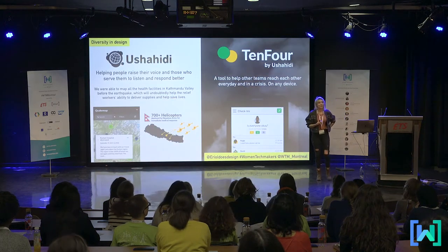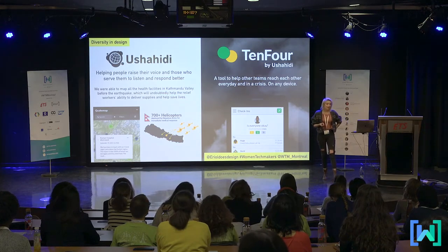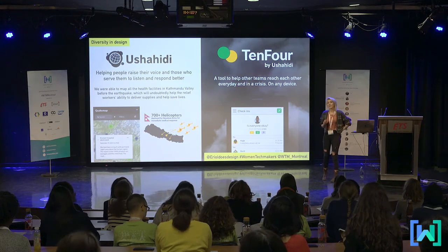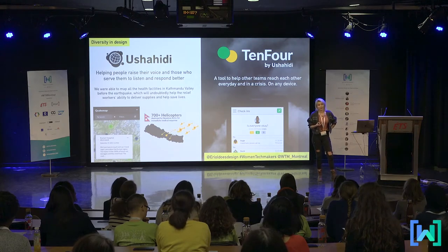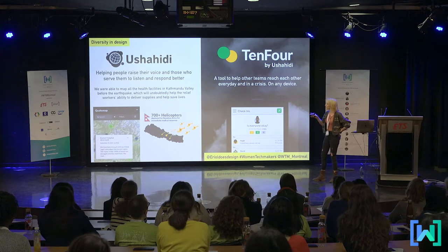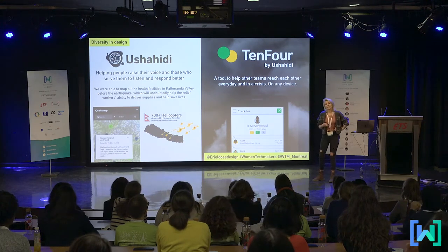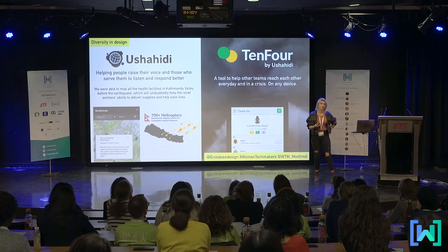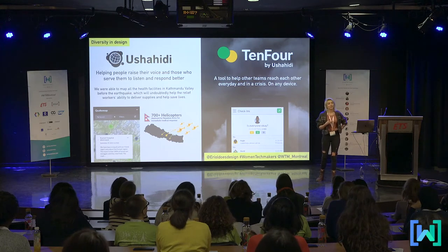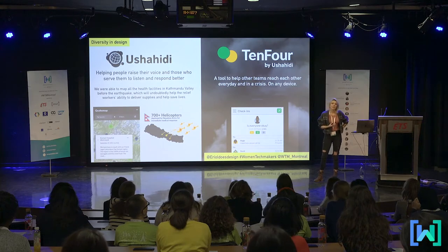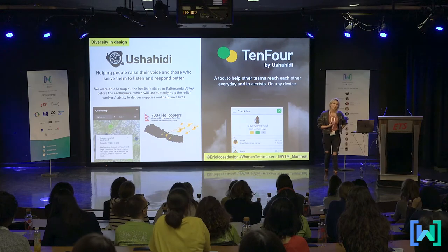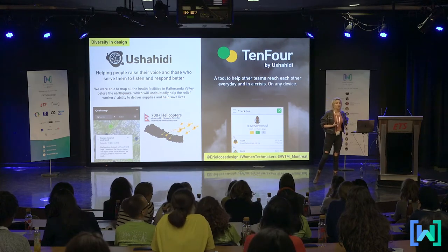I work for a company called Ushahidi. We are a humanitarian tech company. We were created 10 years ago and we created an open source data collection platform around the election violence that happened in Kenya in the 2007 elections. Since then, the tool has been used in lots of different ways — to help people when they've experienced natural disasters. In the Nepal earthquakes, the platform was used to collect data to send helicopters to where people were in real danger. Most recently, we've had people contact us around Cyclone Idai. We've helped people in Kerala, and also with street harassment initiatives in Egypt and the UK.